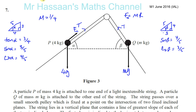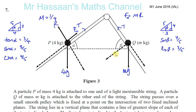Let's start resolving the forces. For the weight of P, we resolve into two directions along and perpendicular to the plane. This angle is alpha, so we get 4g cos alpha going into the plane and 4g sin alpha along the plane. Similarly for Q, the angle is beta, giving Mg sin beta and Mg cos beta.